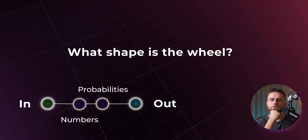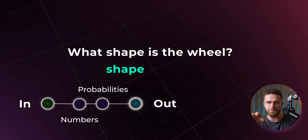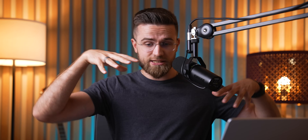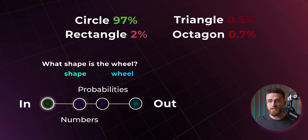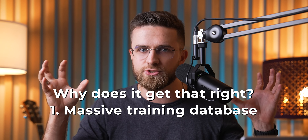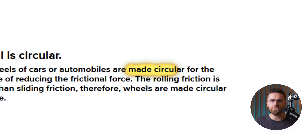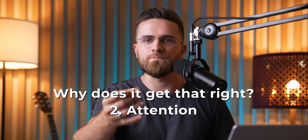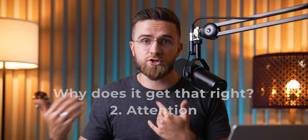Let's say you ask, 'What shape is the wheel?' The model breaks that into keywords, like 'shape' and 'wheel.' Then it calculates how those words relate. It looks at the data and thinks, the next word with the highest probability here is 'circle.' Boom — it gives you the answer. Why does it get that right? Two main reasons. First, massive training data — these models have read so much text, and somewhere in there they've seen plenty of mentions about wheels being circular. Second, attention — this helps the model focus on the important parts of the input, like 'shape' and 'wheel,' instead of random filler. But they don't understand like we do. For them, there are no actual words — it's all just numbers, probabilities, and math.